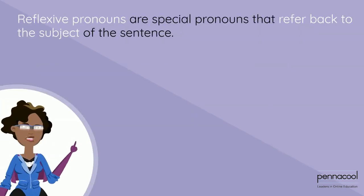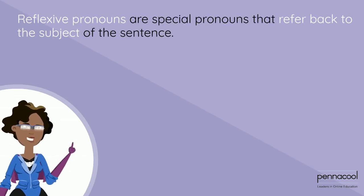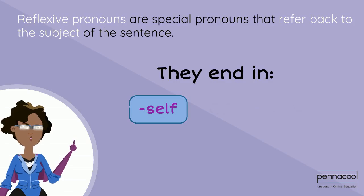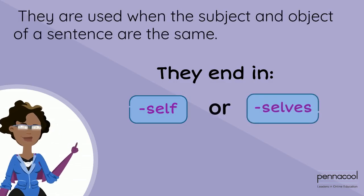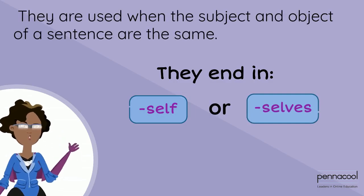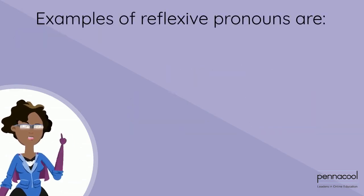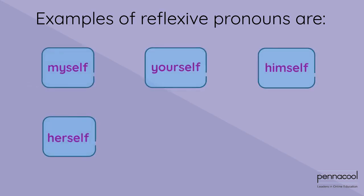Reflexive pronouns are special pronouns that refer back to the subject of the sentence. They end in self or selves. They are used when the subject and object of a sentence are the same. Examples of reflexive pronouns are myself, yourself, himself, itself, and ourselves.